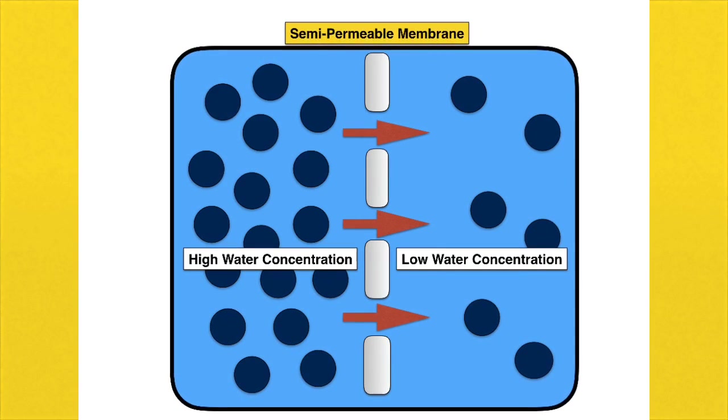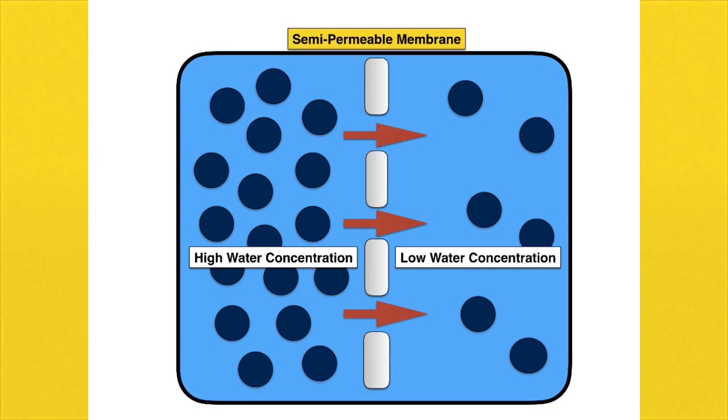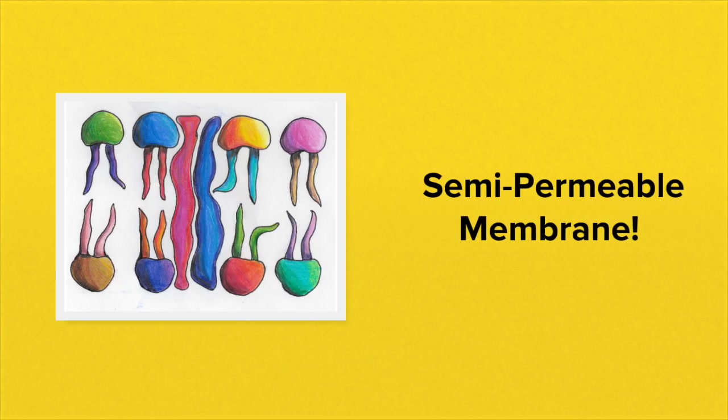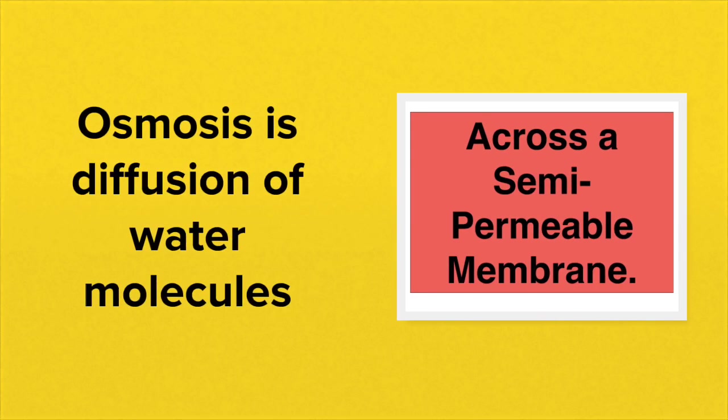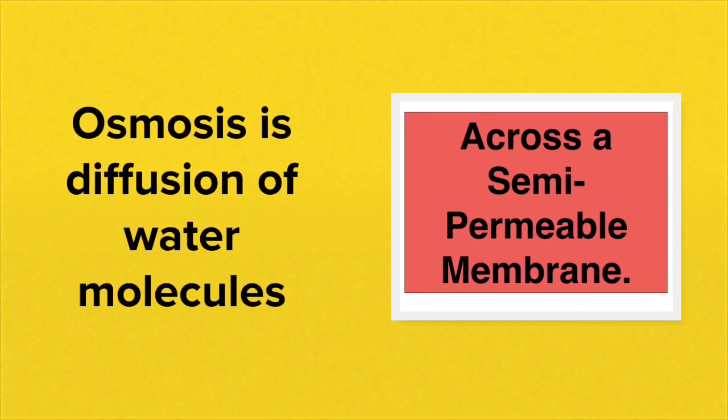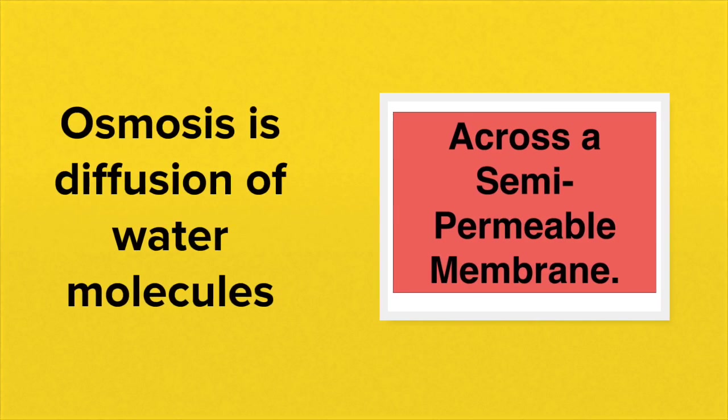These water molecules will move from that region of high water concentration to that region of low water concentration. And that movement must be across a semi-permeable membrane. So osmosis is a special case of diffusion because it only involves the movement of water molecules and they are moving across a semi-permeable membrane.